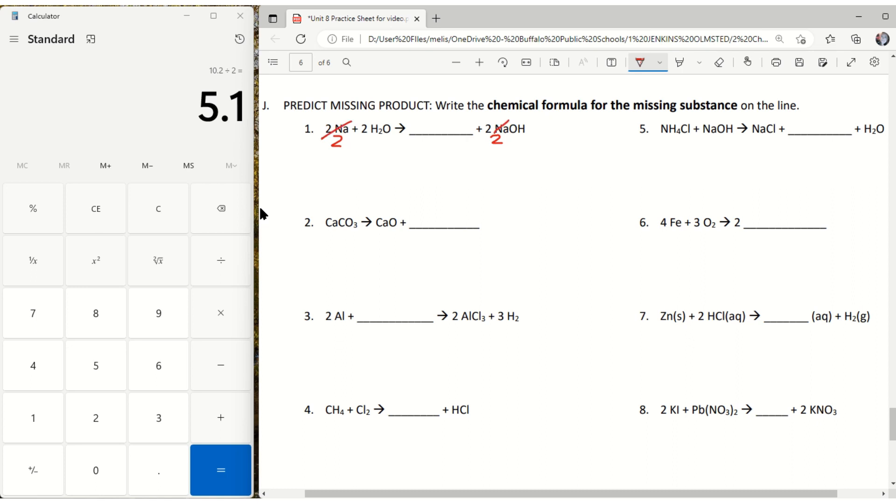I have two times two is four hydrogens. I have two times one, so I have two hydrogens. So far I know that this contains two hydrogens.